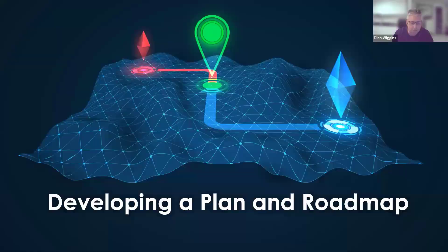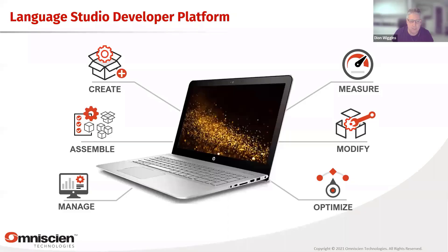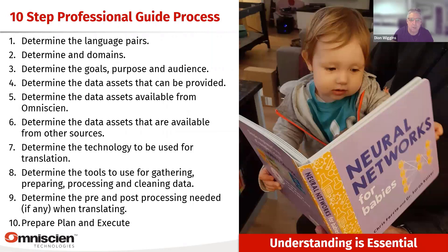So how do we achieve this? In our platform — the Language Studio developer platform — we create, assemble, manage, measure, modify, and optimize. We've got all the tools built in to do that. There's a 10-step basic process where you determine language pairs, domains, and the goals and purpose — for example, automotive engineering versus automotive legal and marketing.